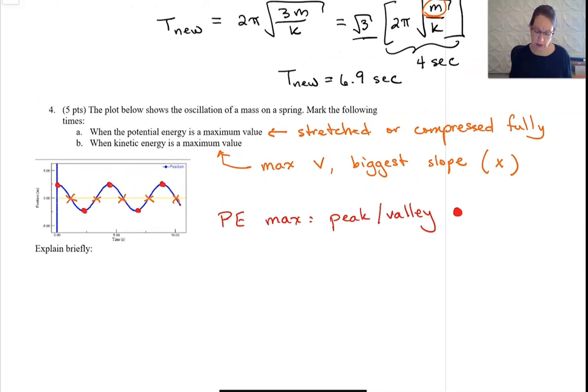This would be probably stretched and then compressed, and then the maximum kinetic energy is right when it's coming through equilibrium, because that's when it's moving the fastest.